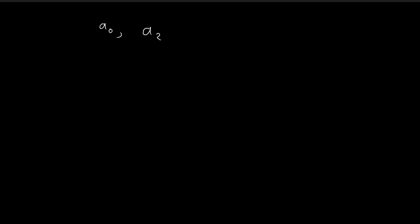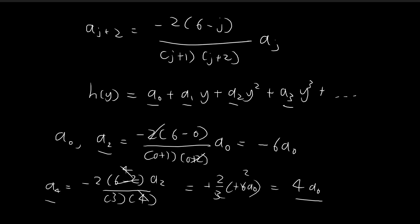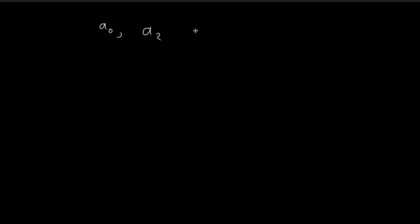Let's summarize what we just found. Starting with A0, we found: A2 equals negative 6 A0, A4 equals 4 A0, and A6 equals negative 8 over 15 A0.